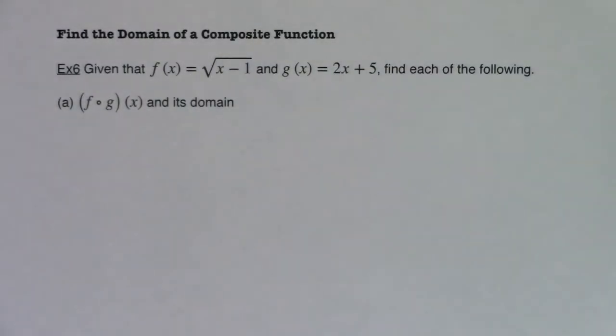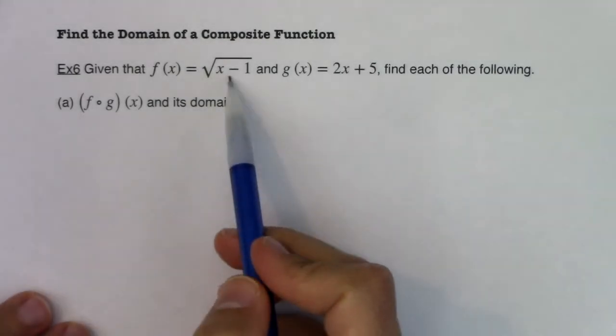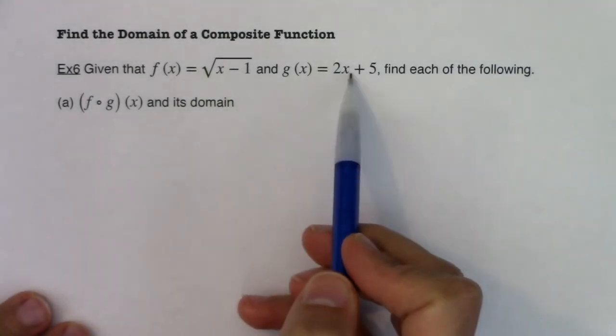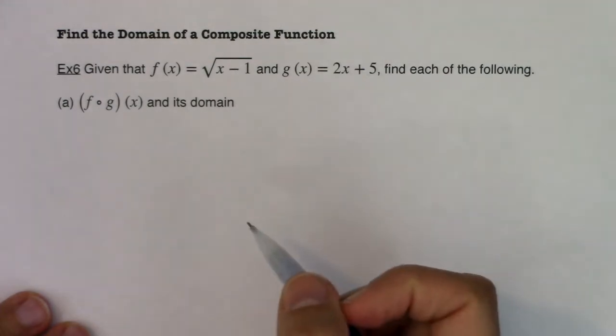So with that being said, let's give it a try. This is telling us that f of x is a radical, and g of x is just a regular old line — 2x plus 5, slope 2, y-intercept 5.